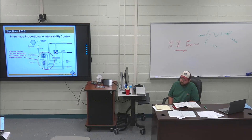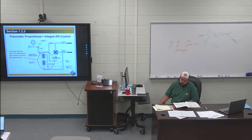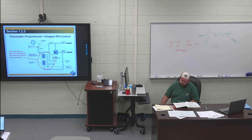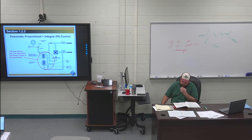Section 124 — proportional controllers with integral and derivative, i.e., PID control. That's the highest level control we're going to talk about. The online test question is the third sentence on page five: 'The amount of delay is determined by the rate at which the difference between the set point and control point increases or decreases.'